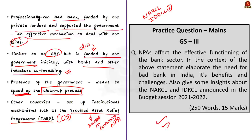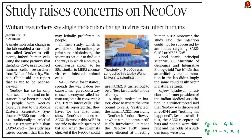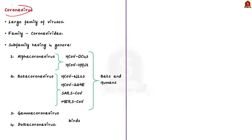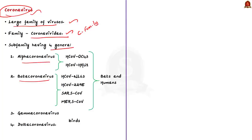The next news article mentions a study on a coronavirus called NeoCov. The study has found that a change at the molecular level of NeoCov could enable it to infect humans. To understand NeoCov, we must brush up our basics about coronaviruses. Coronaviruses are a large family of viruses belonging to the family Coronaviridae. One of its sub-families has four genera: alpha coronavirus, beta coronavirus, gamma coronavirus, and delta coronavirus.